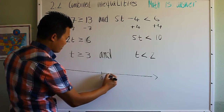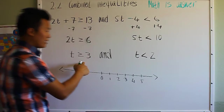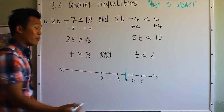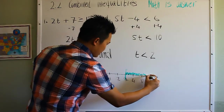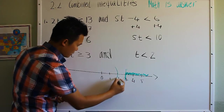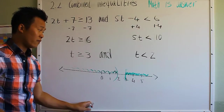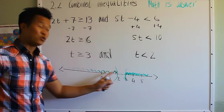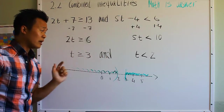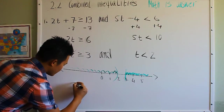On the number line with 0, 1, 2, 3, 4, 5: t greater than or equal to 3 is shaded from 3 onward using a bracket. Then anything less than 2 is shaded going left from 2. When dealing with an 'and' inequality, we look for the intersection of the two shaded regions. These two do not intersect, so this problem has no solution.